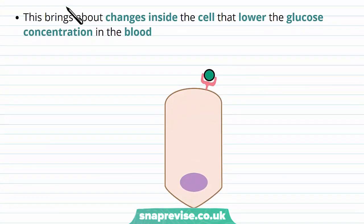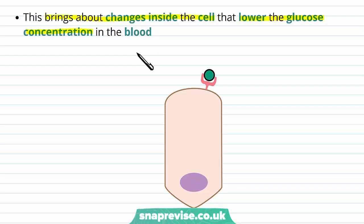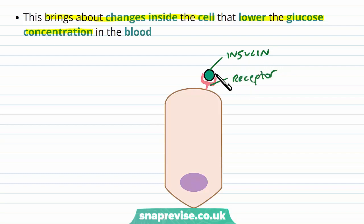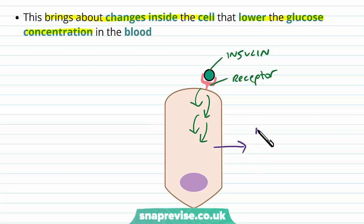Once the insulin binds to the receptors, it brings about changes inside the cell biochemically, which help to then lower the blood glucose concentration and bring it back down to normal. Once the insulin and its receptor have formed the complex in the membrane, the cell triggers particular activities to happen, and the result of these activities brings down the blood glucose.